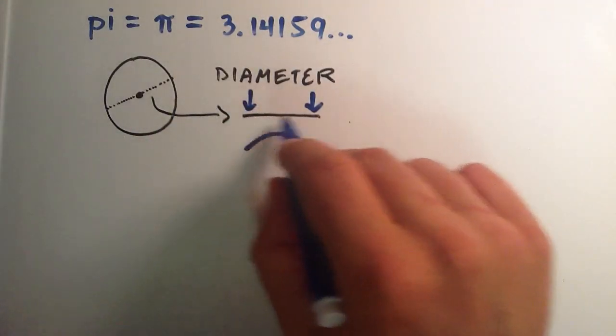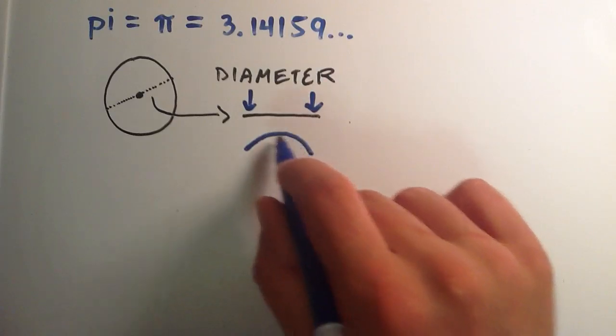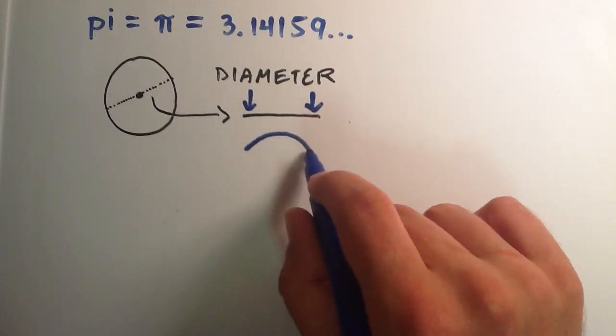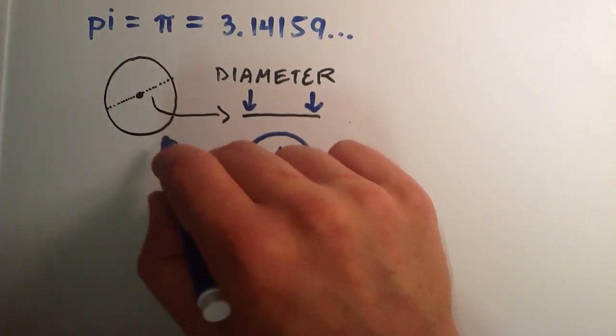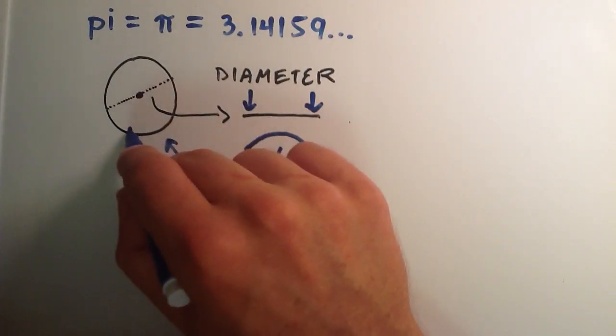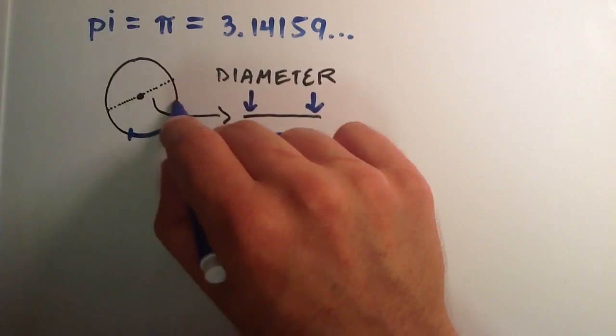Now that I've bent this line into this nice shape, it has the same length as the original diameter, if you were to measure this way. And we're just going to place it snugly on the outside of the circle, like so.